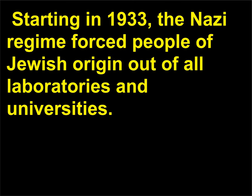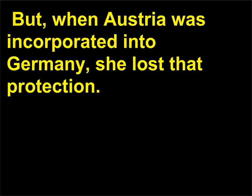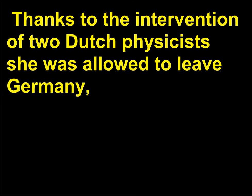Starting in 1933, the Nazi regime forced people of Jewish origin out of all laboratories and universities. Meitner, who had Jewish parents but had converted to Protestantism in 1908, was protected because she was Austrian. But when Austria was incorporated into Germany, she lost that protection. In July 1938 she took the train from Berlin to the Netherlands — thanks to the intervention of two Dutch physicists she was allowed to leave Germany, but with no possessions.